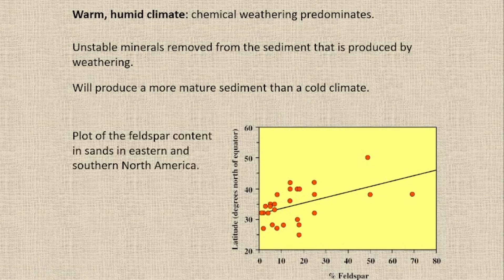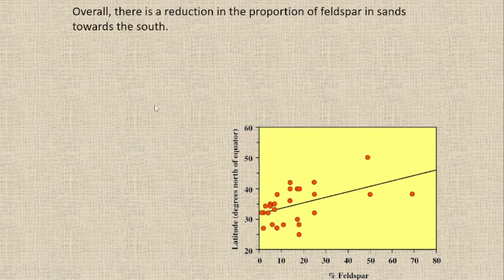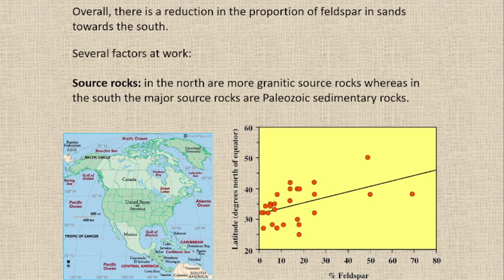Taking the example of a plot of feldspar content in sands in eastern and southern North America: overall, there is a reduction in the production of feldspar in sandstone toward the south. Why is that? Several factors are at work here. Source rocks in the North are more granitic, whereas in the South, the major source rocks are Paleozoic sedimentary rocks. Looking at the map of the United States, North and South — in the North, more granitic sources are present, while in the South, the major source rock is Paleozoic sedimentary rock. Both are different from each other: one is sedimentary and another is granitic rock. The factors at work are tectonic setup and climatic condition.